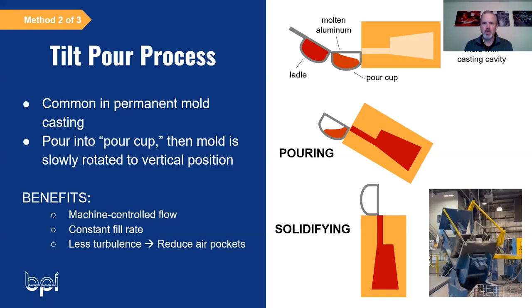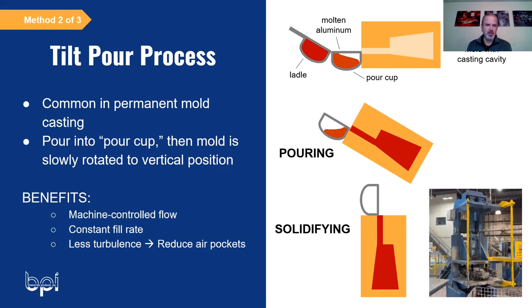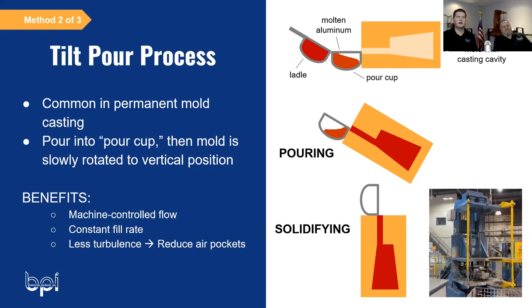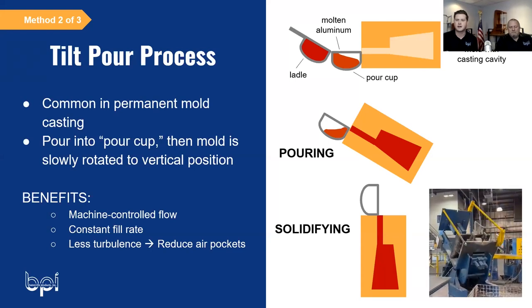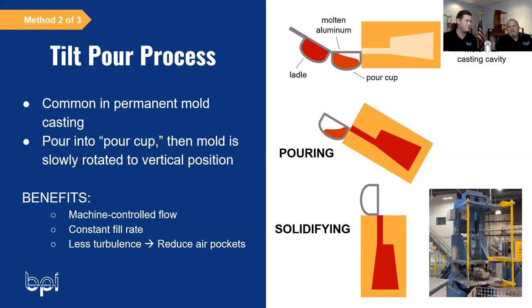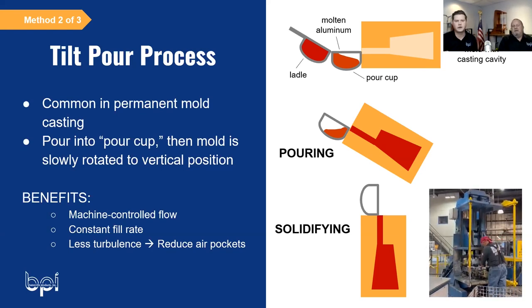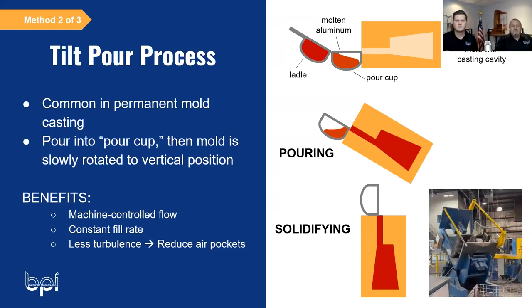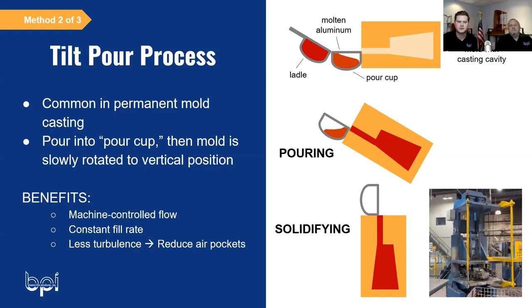A question came in about porosity differences between static and tilt pour. We covered this in a previous webinar — the difference between porosity, gas entrapment, and different types of imperfections. You're more apt to get more gas with a static pour than with a tilt pour. That's due to directly feeding into the pour — the more time the metal spends exposed to the atmosphere, the more gas you get. We'll make sure to share that previous webinar with the individual who asked.